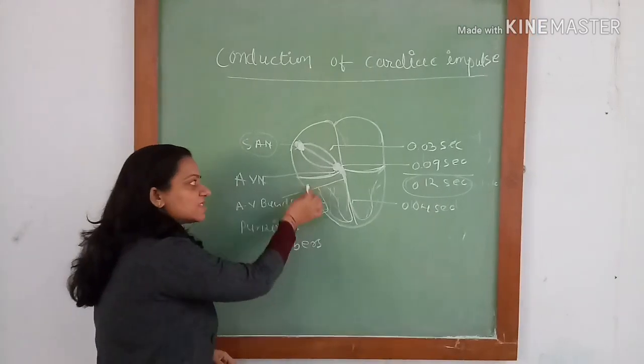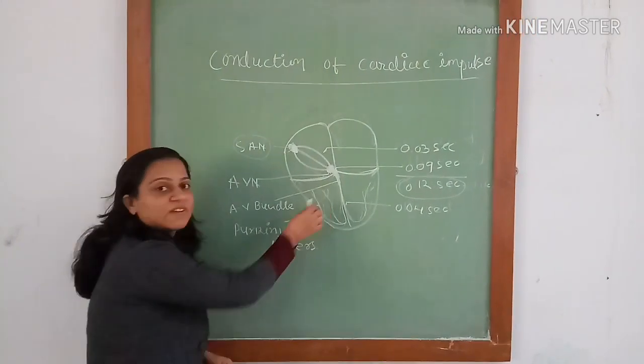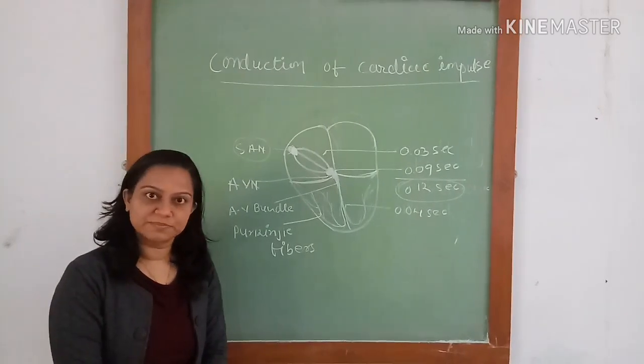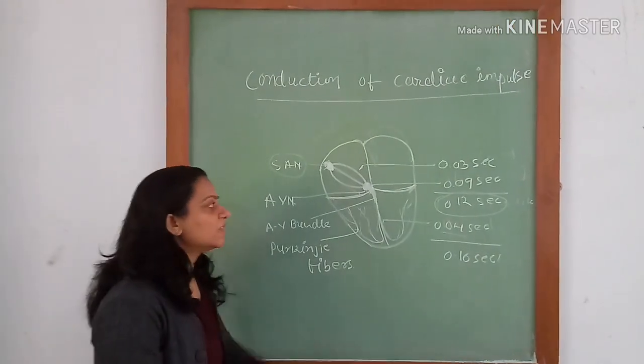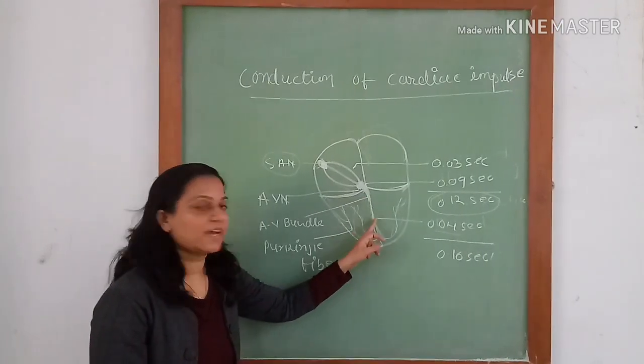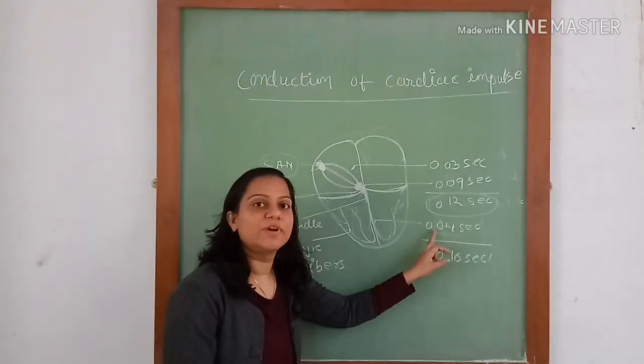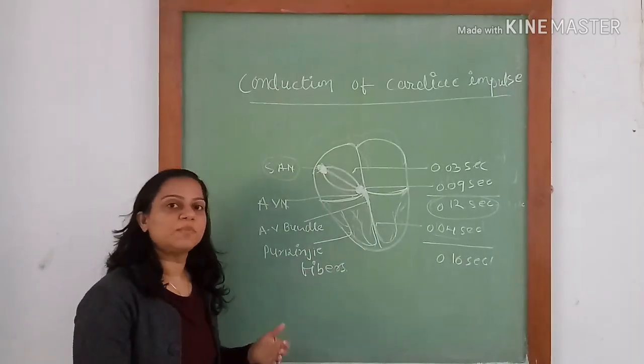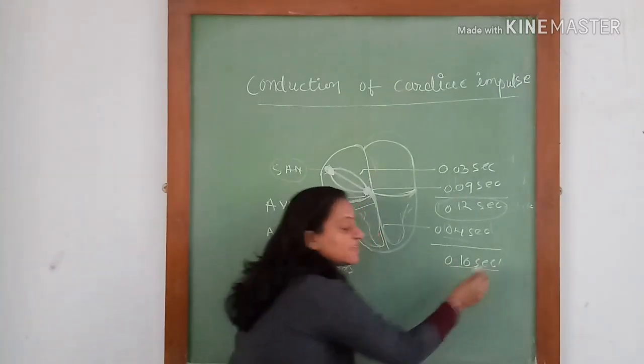From the apex towards the base of the heart, Purkinje fibers move around and innervate the ventricular walls. Time taken for the impulse to move through the AV bundle and right and left branches is 0.04 second, so total time taken for the impulse is 0.16 second.